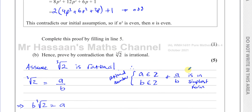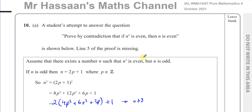That concludes the answer for question number 10 part B, and that wraps up the whole P4 October 2021 paper. Other questions from this paper can be found in the playlist that will appear on screen. Other questions from the topic of proof by contradiction can also be found in a playlist on screen. You can subscribe to the channel, and you'll find the PDF version of this paper in the description of the playlist. You can also watch other papers — P1, P2, P3, S1, M1, and some IGCSE papers — by checking the links in the video description. Thank you for watching and I hope you do well in your exams.